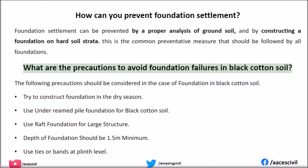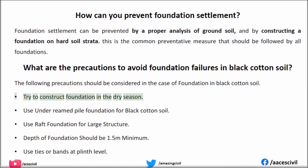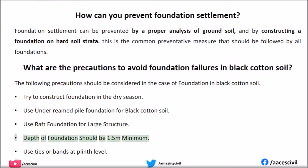What are the precautions to avoid foundation failures in black cotton soil? The following precautions should be considered: Try to construct the foundation in the dry season. Use under-reamed pile foundation for black cotton soil. Use raft foundation for large structures. Depth of foundation should be a minimum of 1.5 m. Use ties or bends at plinth level.